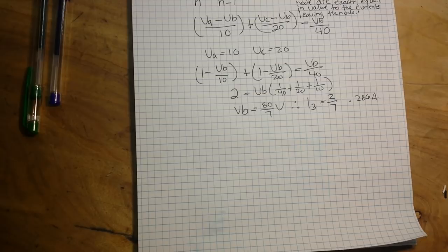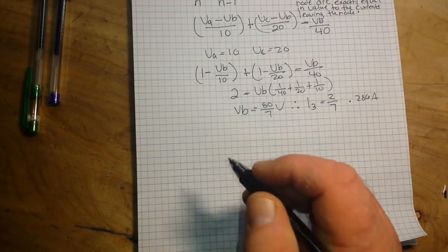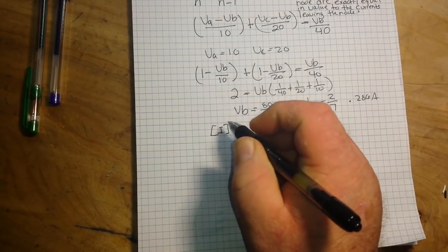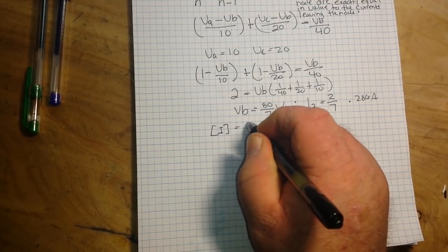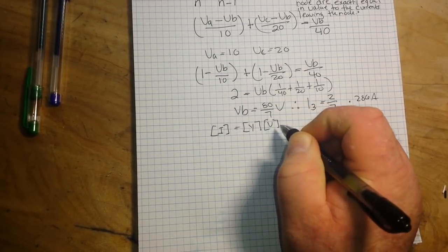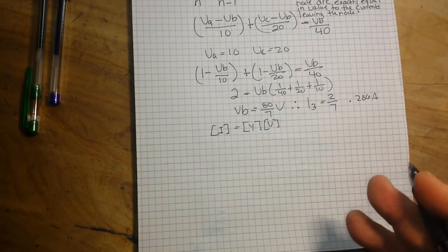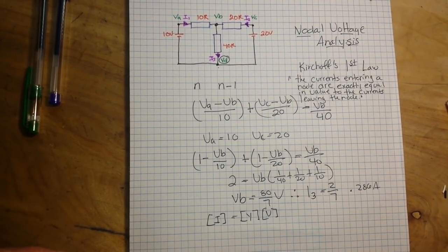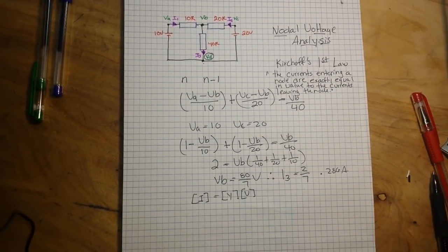Now generally, we want to use a nodal voltage analysis when there are a large number of current sources around. So then we can define the network as something like I equals Y times V. And then we just add up our nodal voltages. But I hope that gives you a little bit of an understanding on nodal circuit analysis.